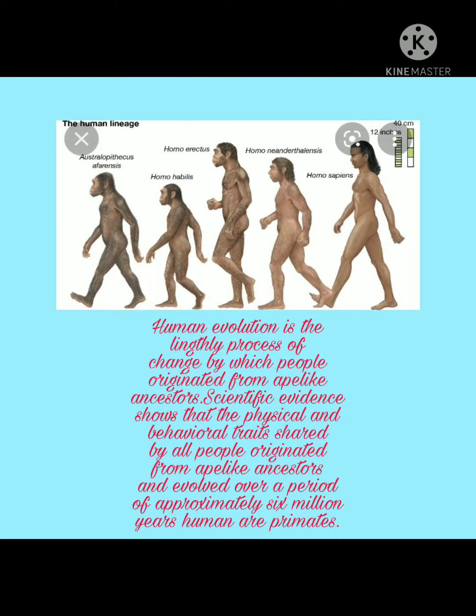Human evolution is the likely process of change by which people originated from ape-like ancestors. Scientific evidence shows that the physical and behavioral traits shared by all people originated from ape-like ancestors and evolved over a period of approximately six million years. Humans are primates.